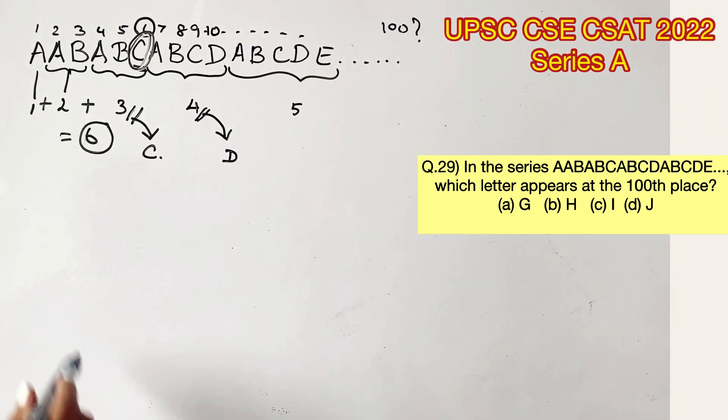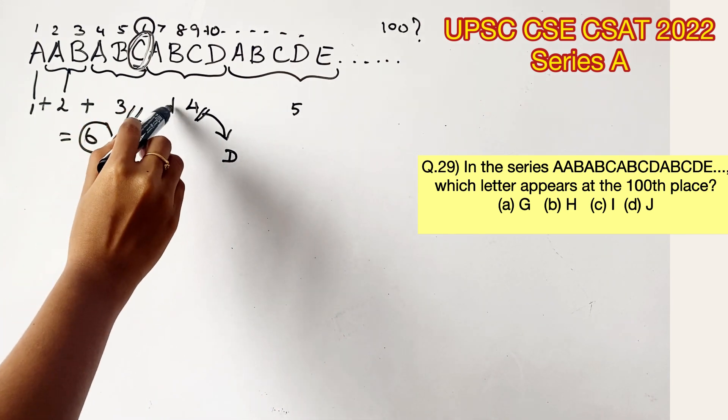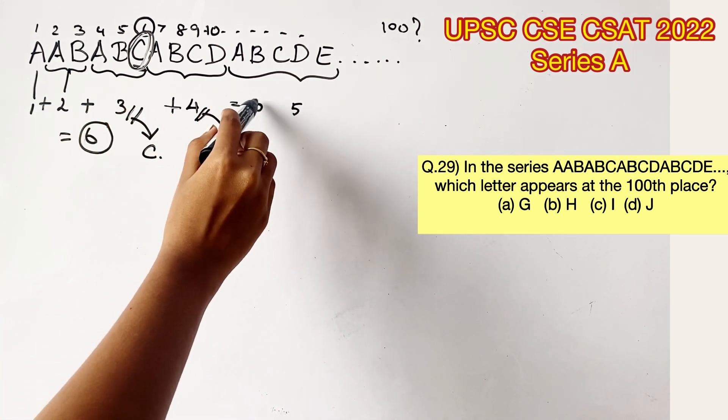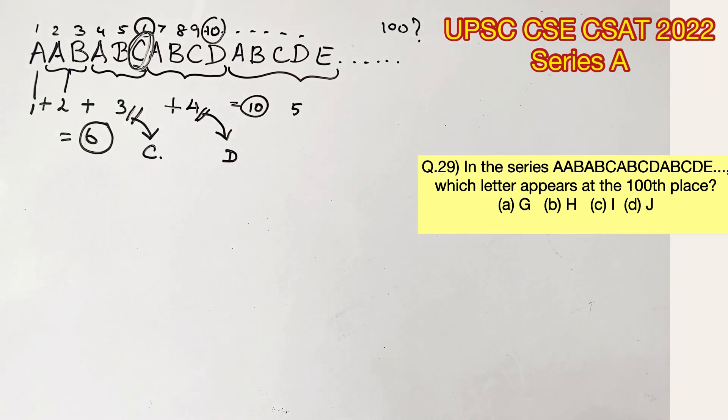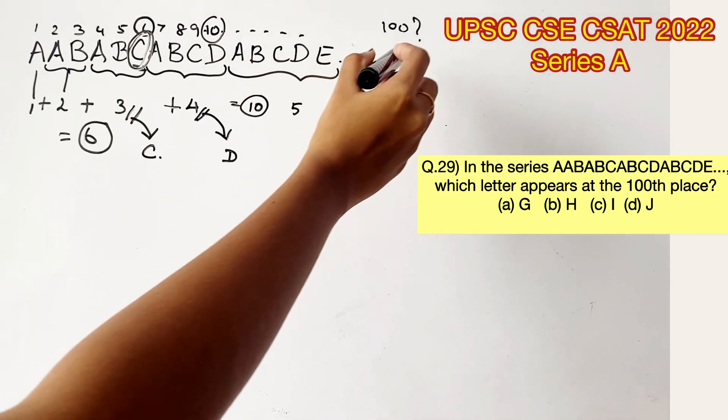For example, we can also take this position, position number 10. If you add up 1 plus 2 plus 3 plus 4, this also will give you 10. So, with this, you can arrive that at position number 10, the 4th letter is sitting. This is the logic we are going to follow to find out which letter will be sitting at the position 100.